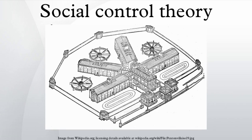Social control theory proposes that people's relationships, commitments, values, norms, and beliefs encourage them not to break the law. Thus, if moral codes are internalized and individuals are tied into and have a stake in their wider community, they will voluntarily limit their propensity to commit deviant acts. The theory seeks to understand the ways in which it is possible to reduce the likelihood of criminality developing in individuals.